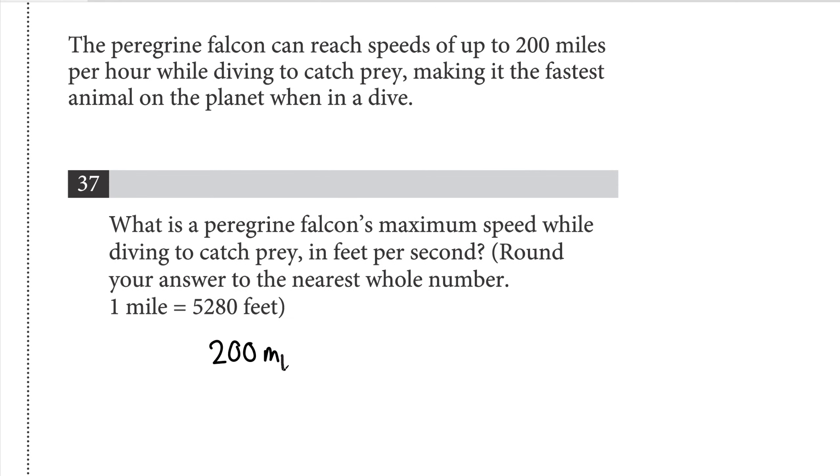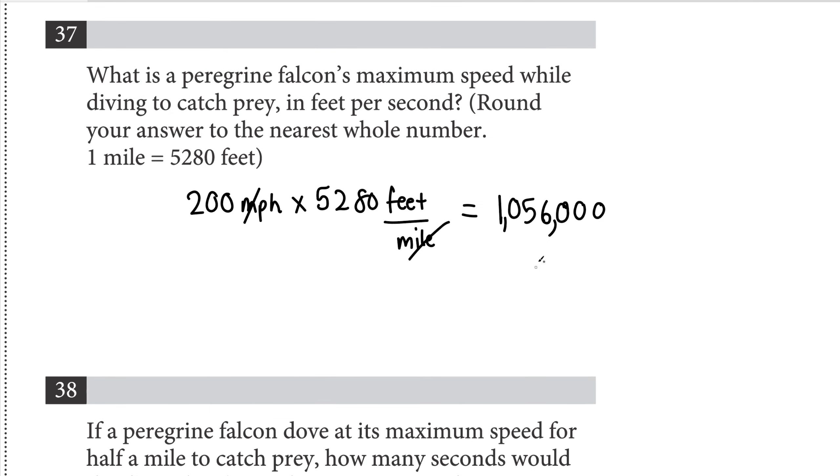We have 200 miles per hour times 5280 feet per mile. So what does this do to the units? This mile in the unit would just cancel out with that one and we're just left with feet per hour. So then we have 200 times 5280 and that's going to be a really large number, 1,056,000. That would be a million fifty-six thousand.